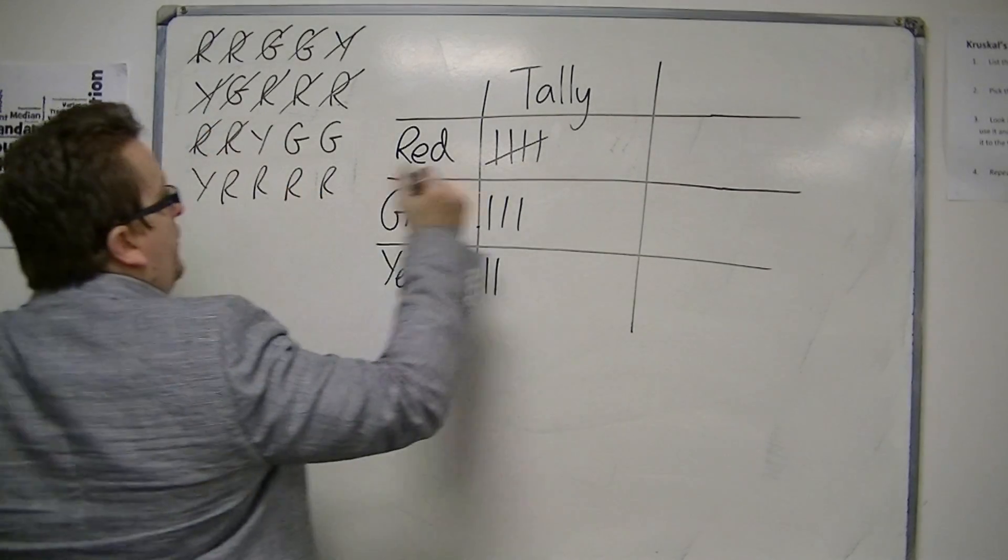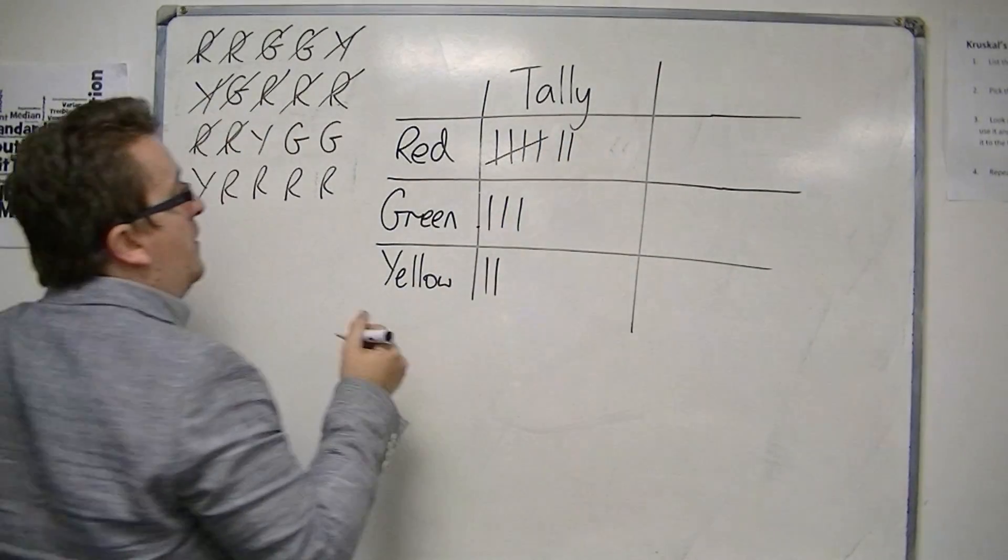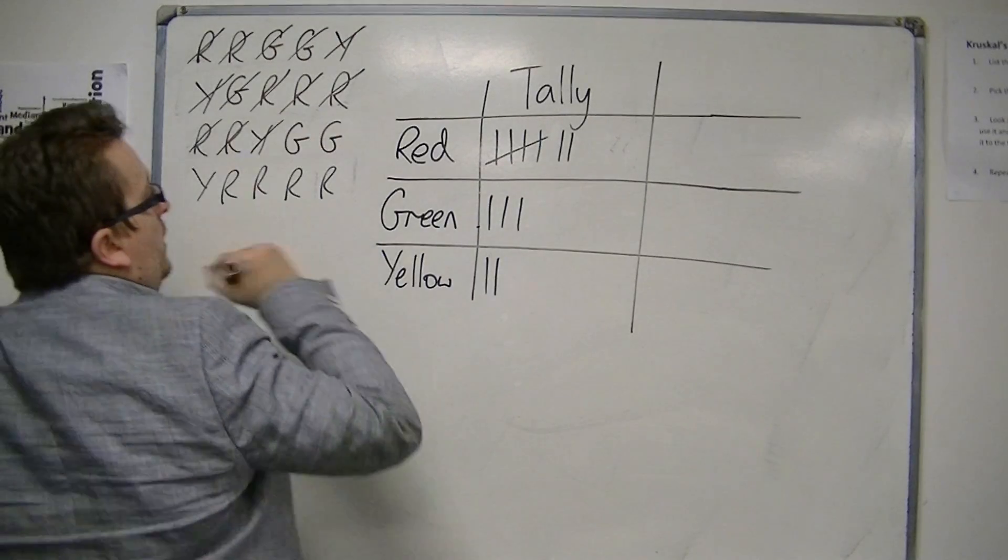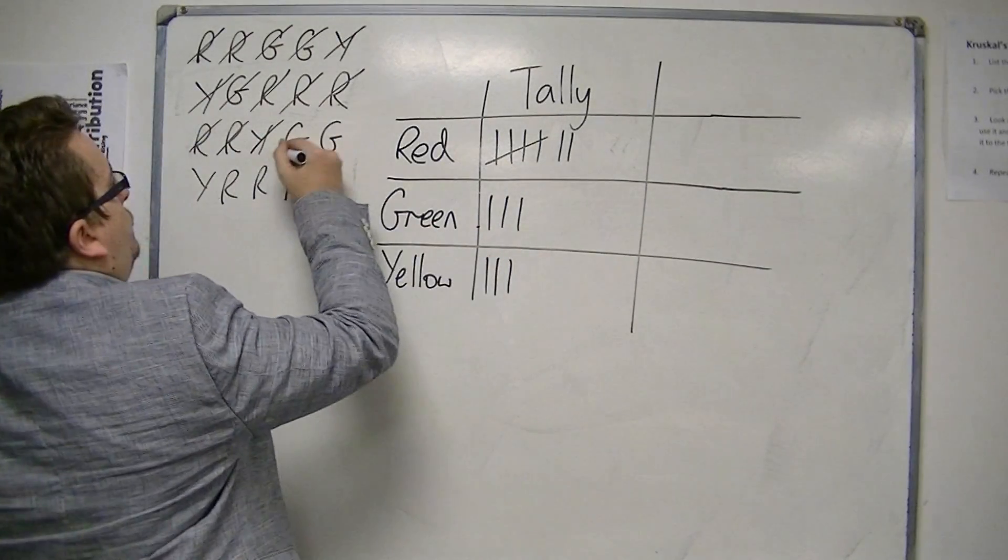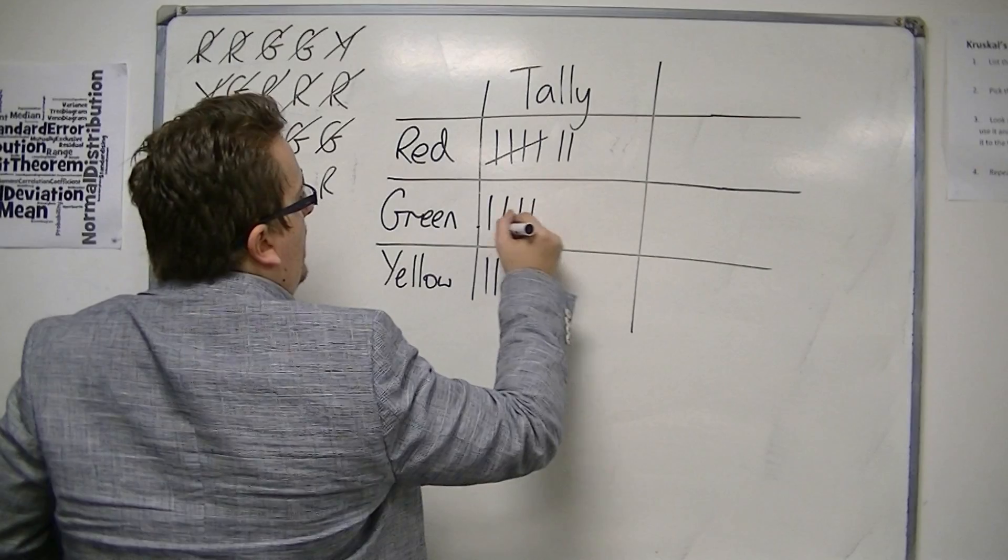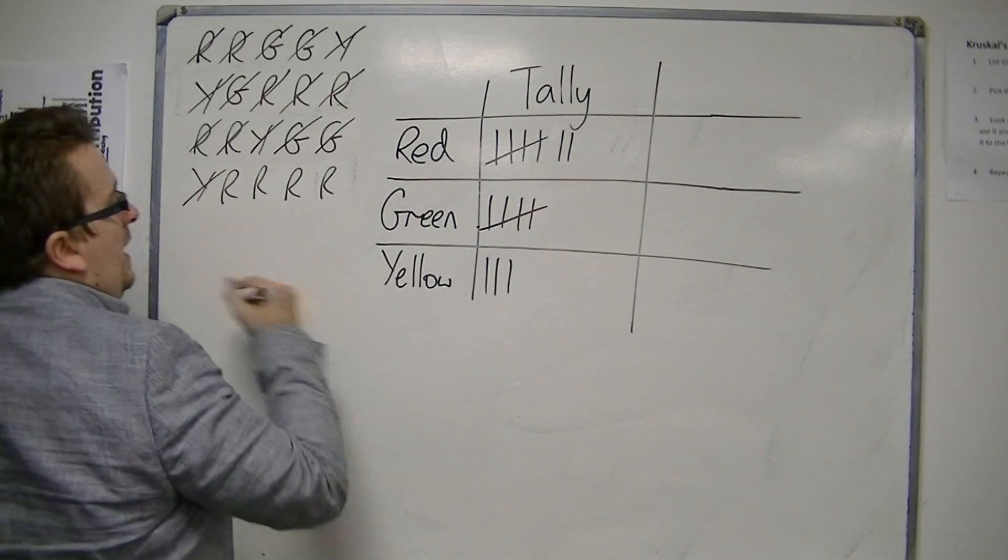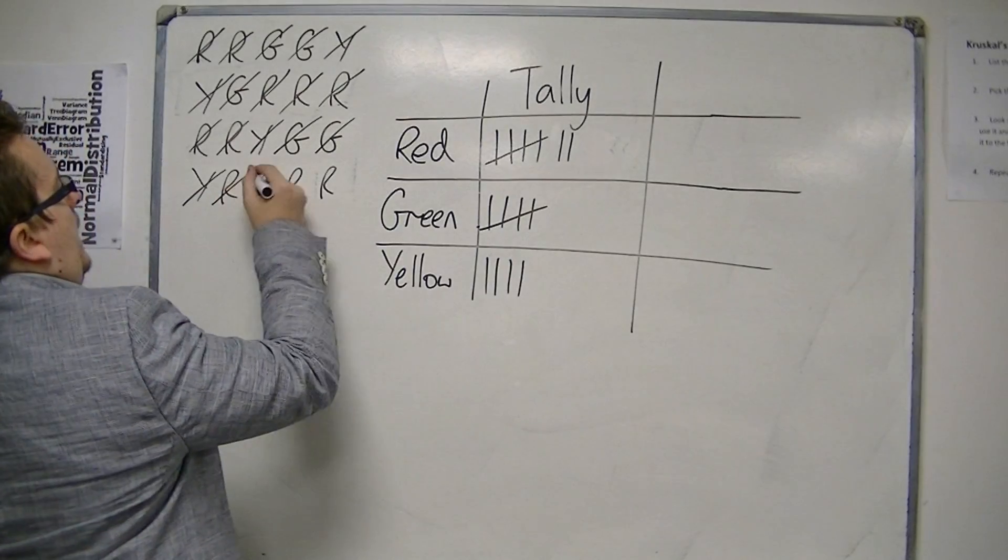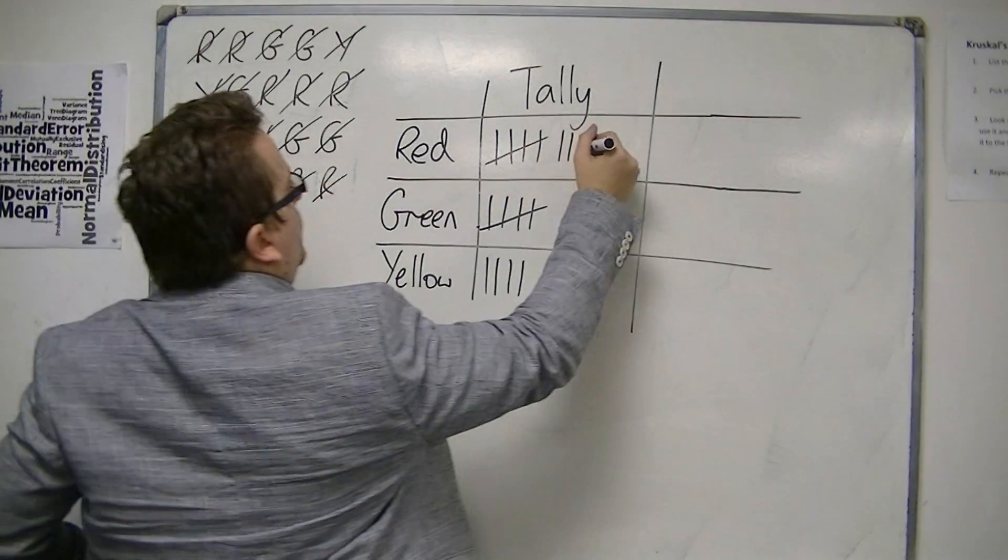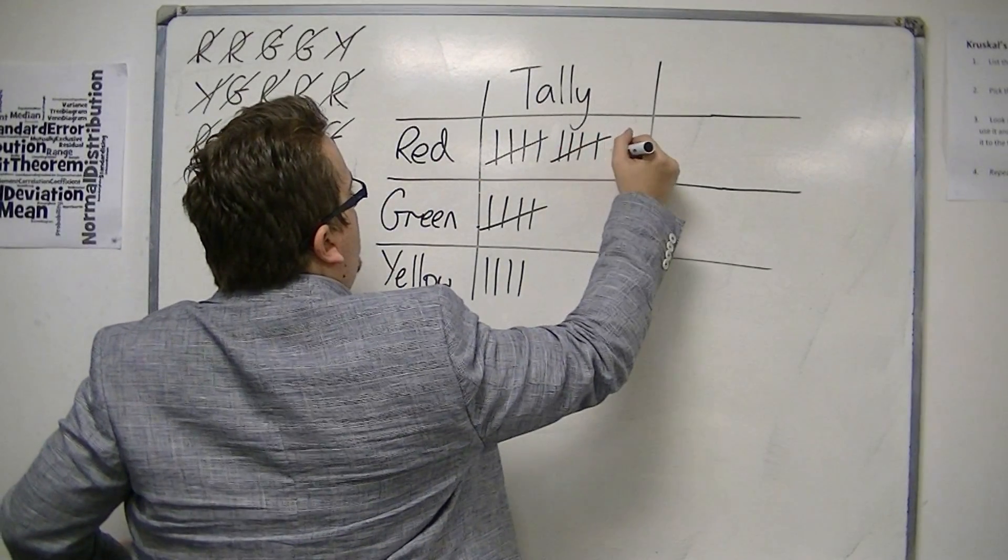Then I've got another two reds, so I start another bunch. Then I've got a yellow. Two greens, so one and then two, so I've wrapped up that bunch as well. One, a yellow, and then four reds. One, two, three, four.